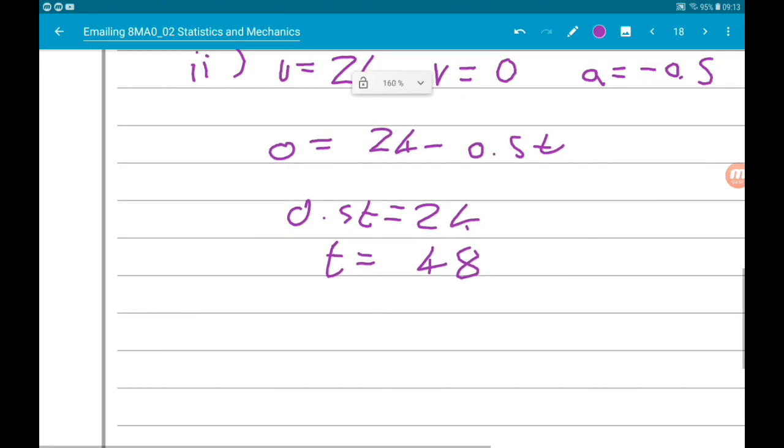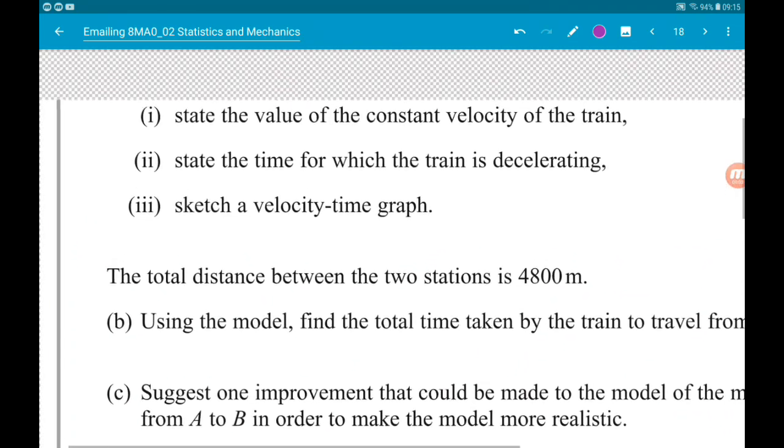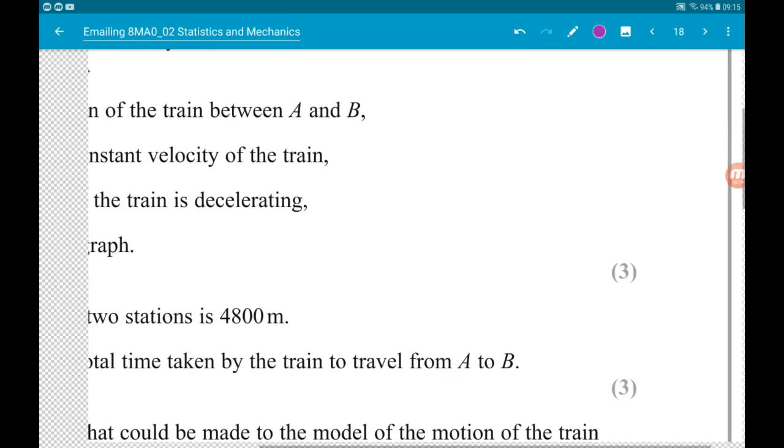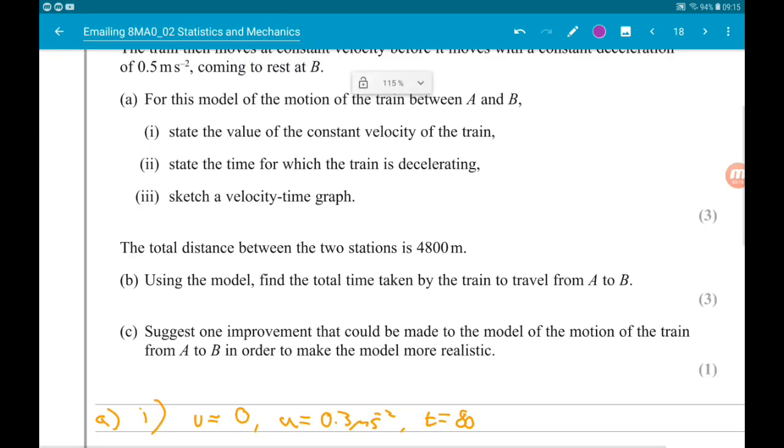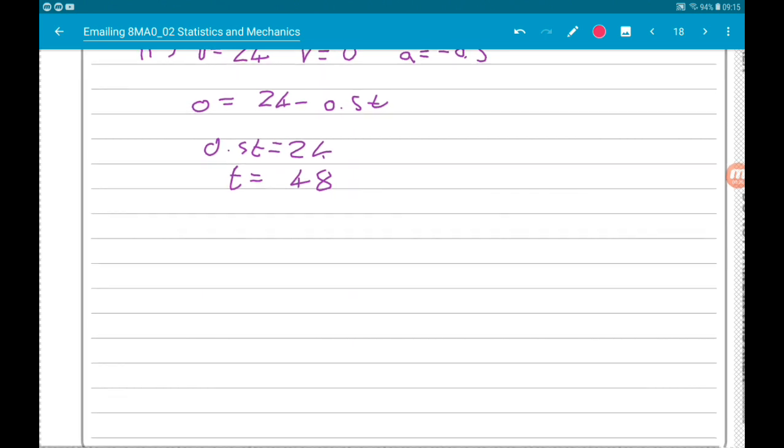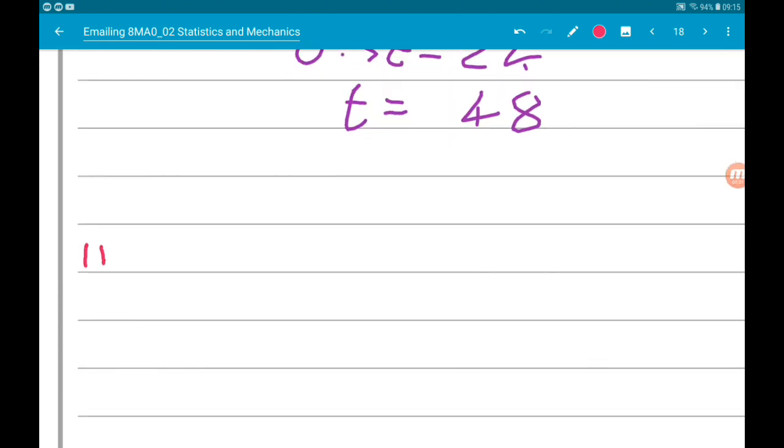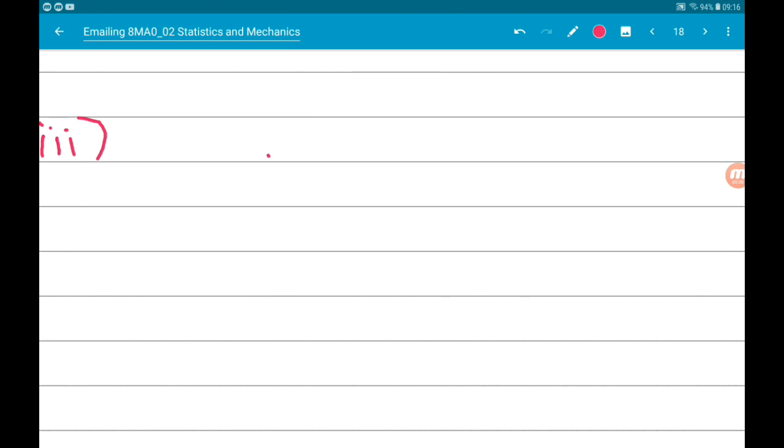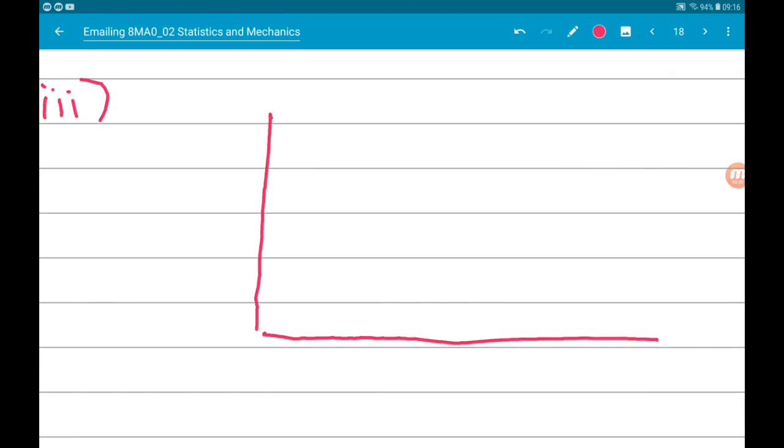Okay, then part three. One says to sketch a velocity time graph. Part A altogether is only worth three marks. This actually does just need to be a sketch, because it's only one mark. Obviously, in the real thing, use a ruler. So there are our axes. So we've got time along the bottom. So let's call that s. And velocity at the side. So that's meters per second.